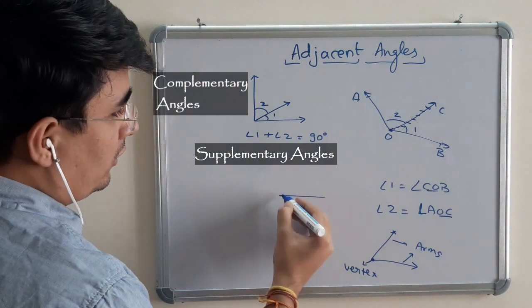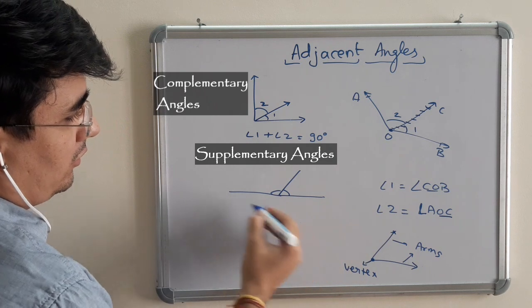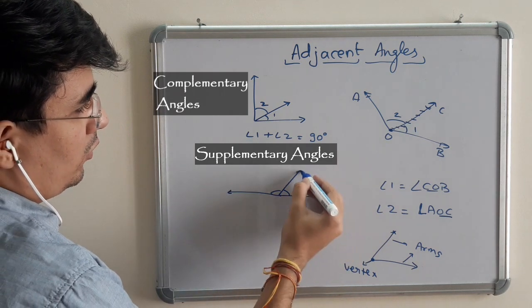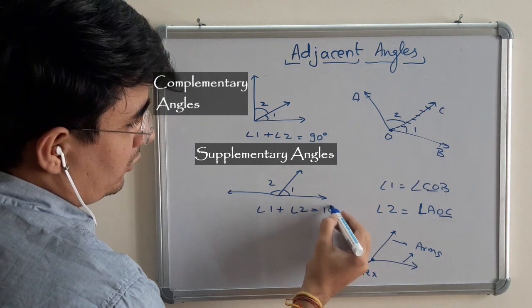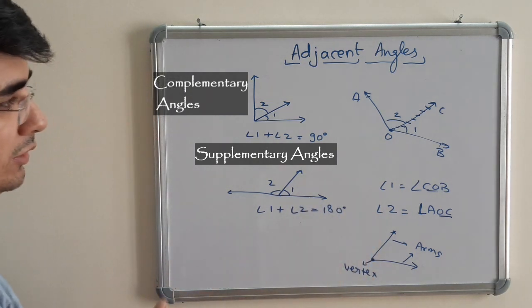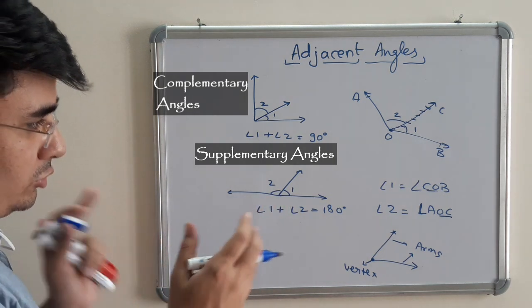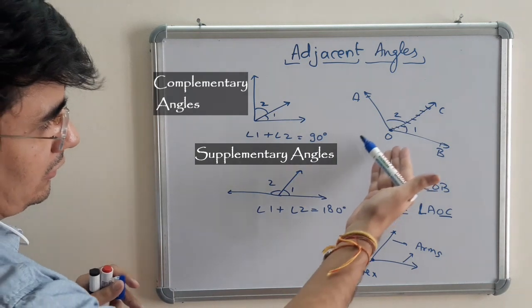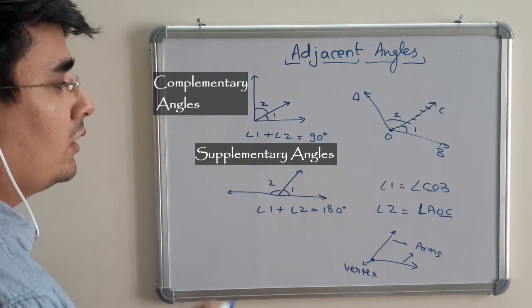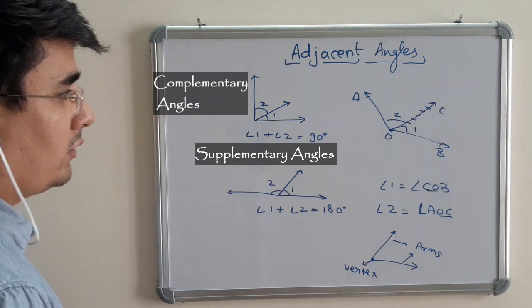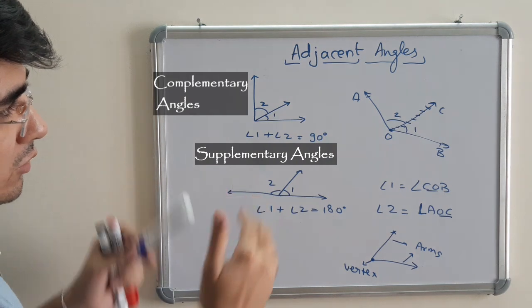Another pair is when the two angles add up to form a straight angle, that means 180 degrees. They are known as supplementary angles. These two adjacent angles joined together to form a straight angle, or 180 degrees, are known as supplementary angles. This is the basic definition, the basic meaning of adjacent angles.